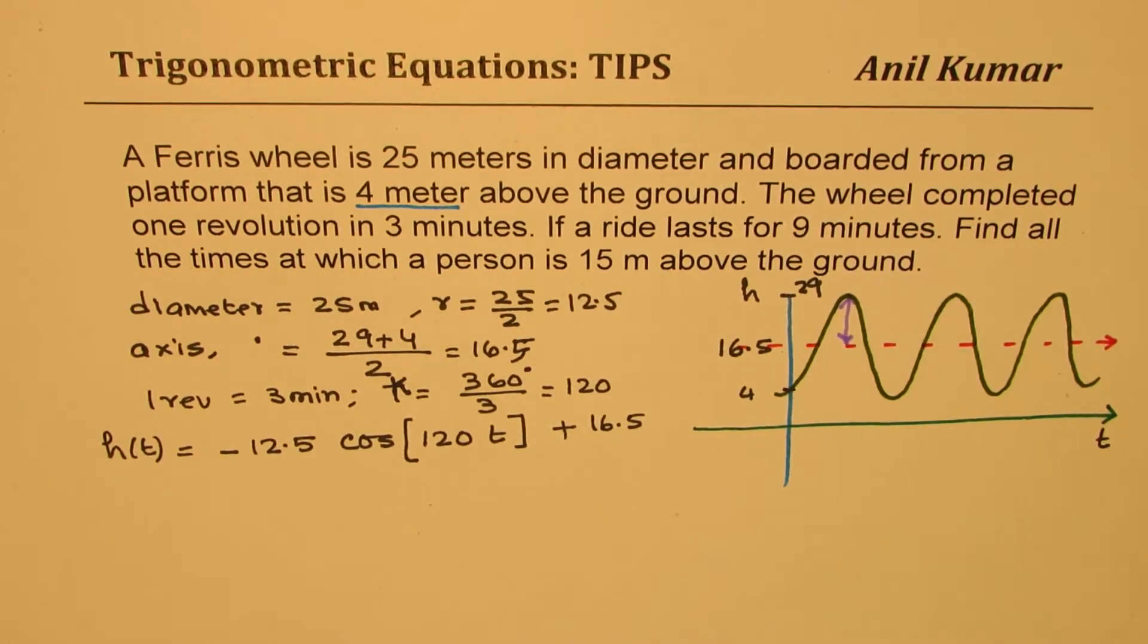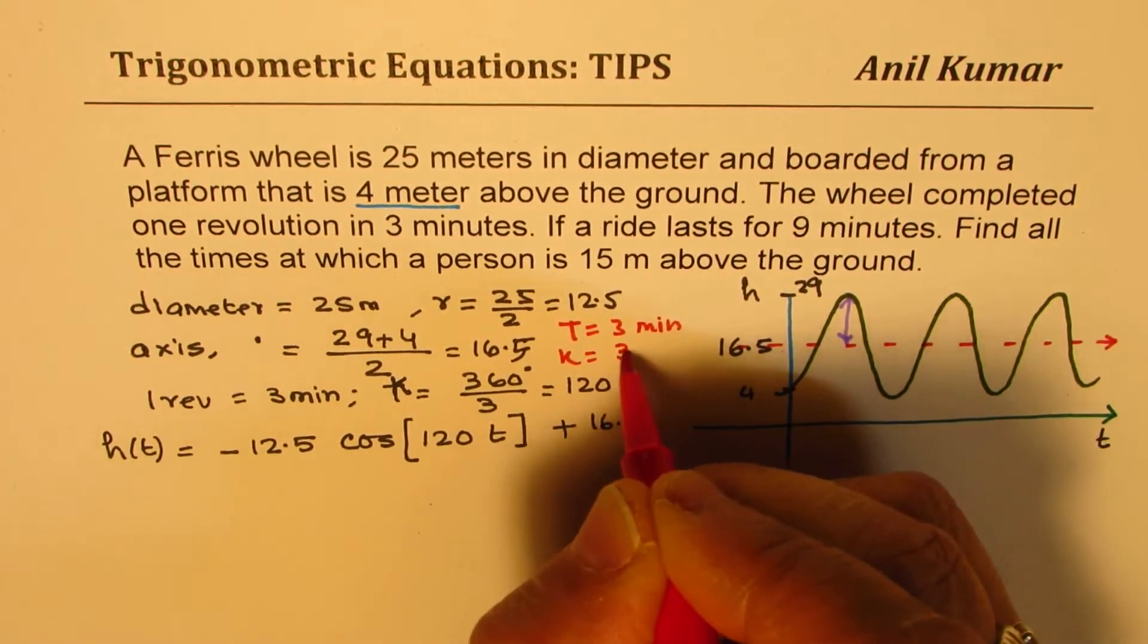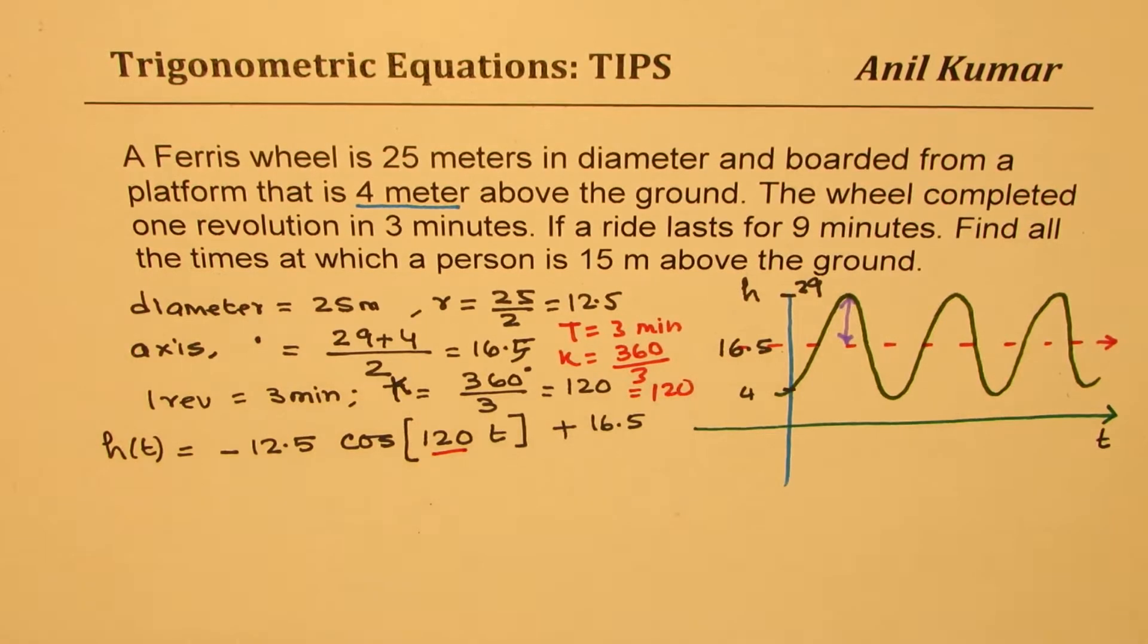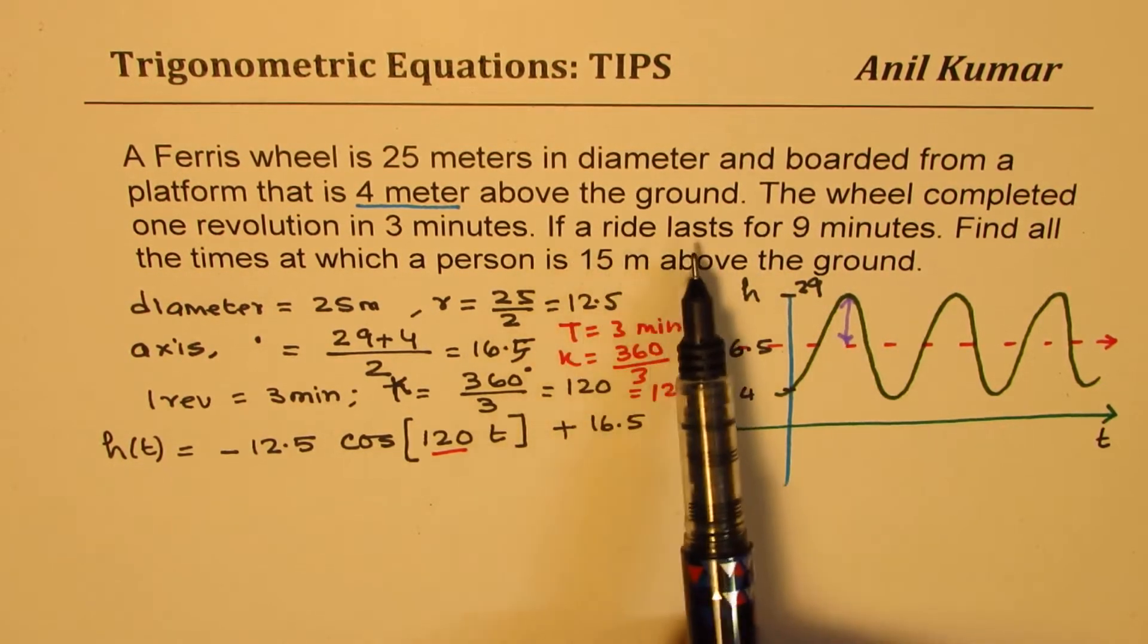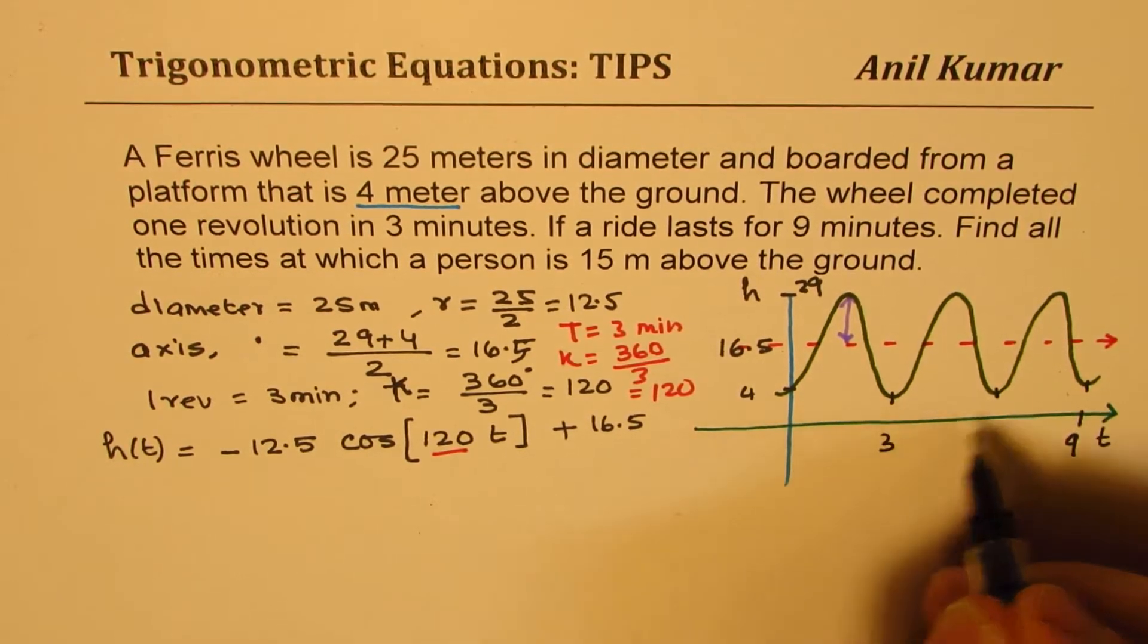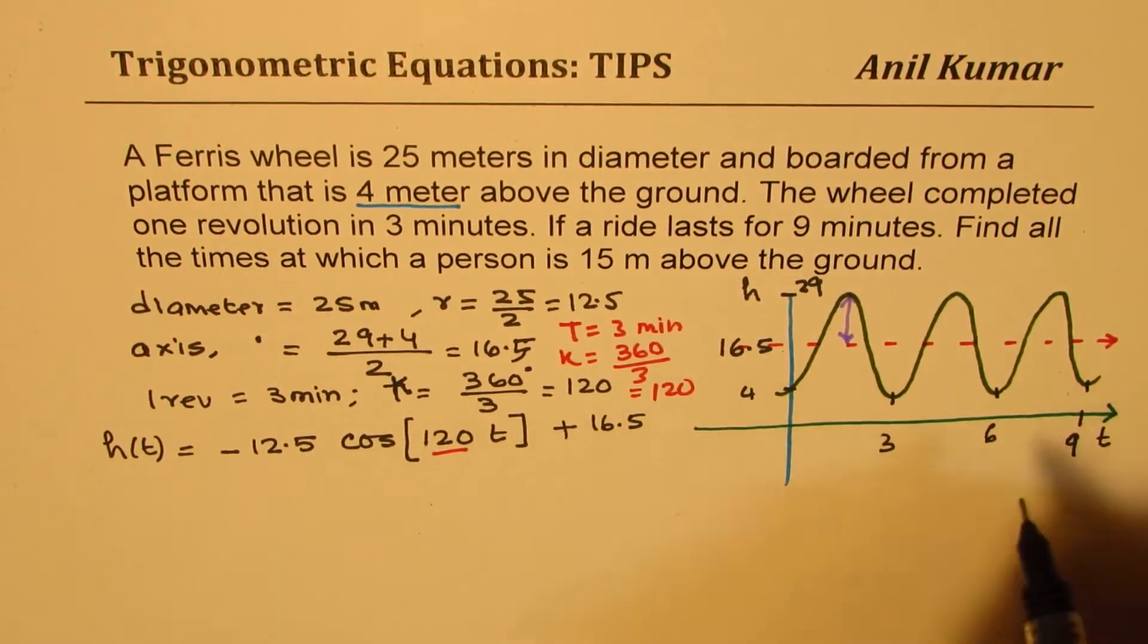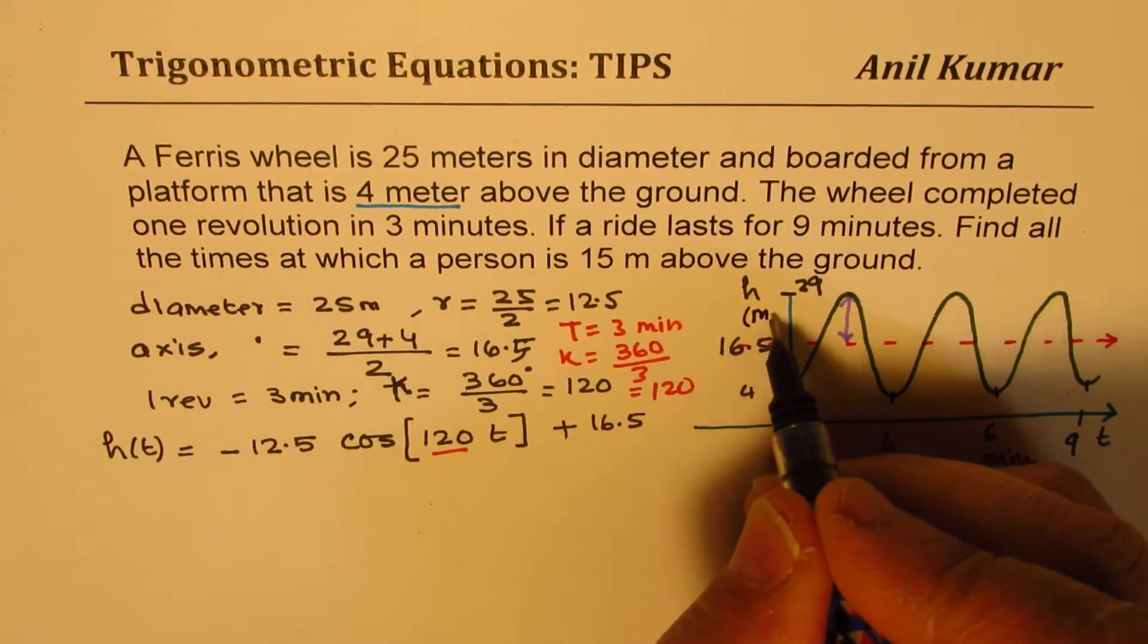We are given time period T as 3 minutes. So K will be 360 by 3, which is 120. Now, the ride lasts for 9 minutes. That means we are looking into 3 cycles. Each cycle takes 3 minutes. This is time in minutes, and height is in meters.